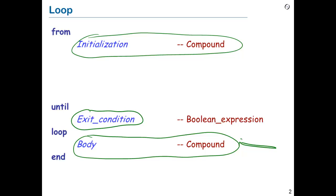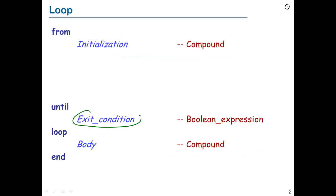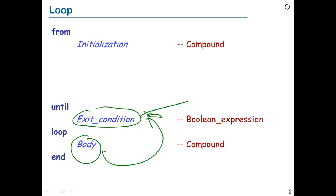If we do the initialization and the exit condition is false, then we know we have to execute the body. And what do we do afterwards? We do it again — not the initialization, of course. The initialization is done once and for all; we don't repeat it. But we test again if the exit condition is true. If it's true, we exit from the loop. If the exit condition is still false, then we execute the body a second time, and again and again.